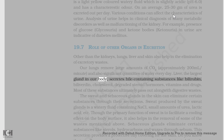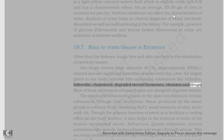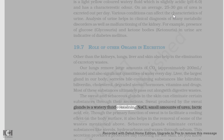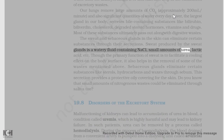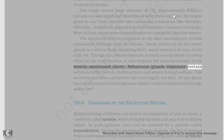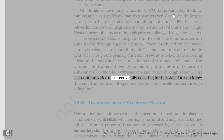Liver, the largest gland in our body, secretes bile containing substances like bilirubin, biliverdin, cholesterol, degraded steroid hormones, vitamins, and drugs. Most of these substances ultimately pass out along with digestive wastes. The sweat and sebaceous glands in the skin can eliminate certain substances through their secretions. Sweat produced by the sweat glands is a watery fluid containing NaCl, small amounts of urea, lactic acid, etc. Though the primary function of sweat is to facilitate a cooling effect on the body surface, it also helps in the removal of some wastes. Sebaceous glands eliminate certain substances like sterols, hydrocarbons, and waxes through sebum. This secretion provides a protective oily covering for the skin.